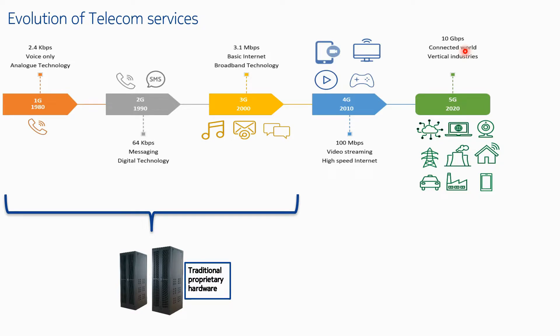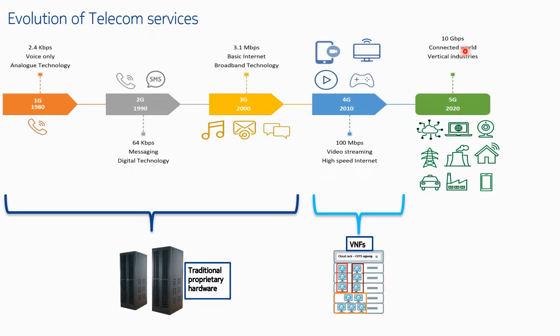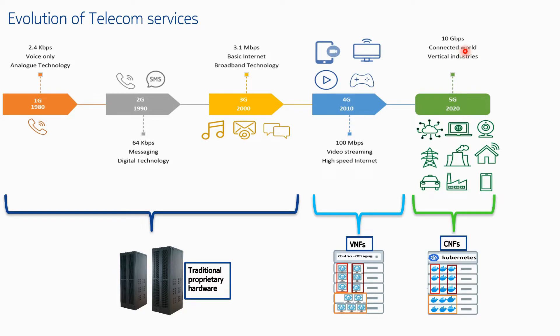If we talk about the infrastructure: from 1G to 3G it was all on traditional proprietary hardware — separate legacy racks for each node, with every vendor having its own proprietary hardware, operating system, and software. In 4G we converted to VNFs, and in 5G going forward there come CNFs. VNF is Virtual Network Function — a group of VMs — and CNF is Containerized Network Function, which is a group of pods.